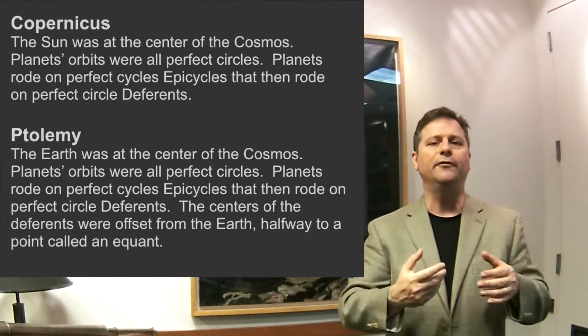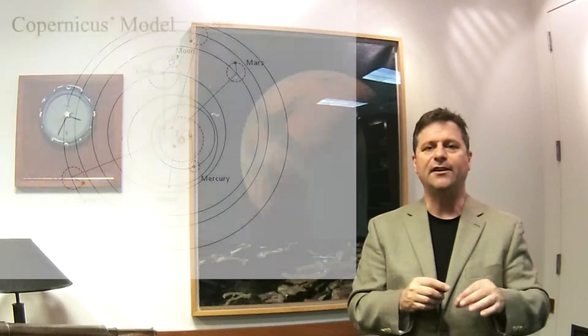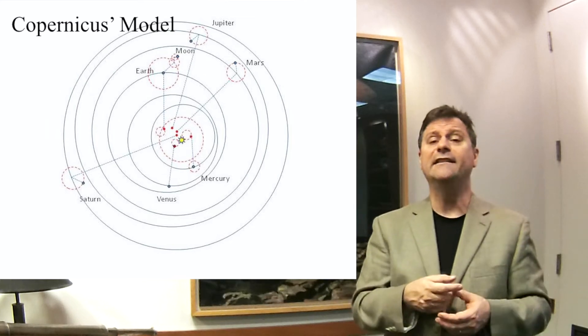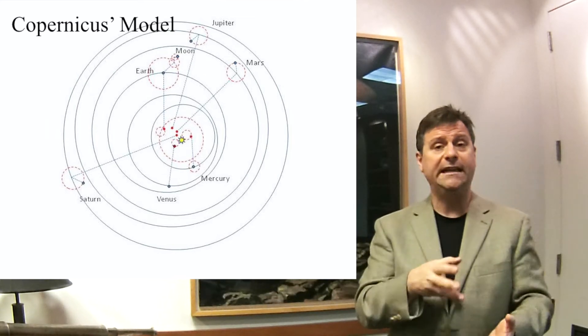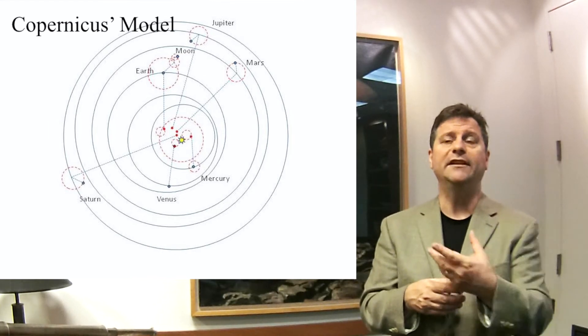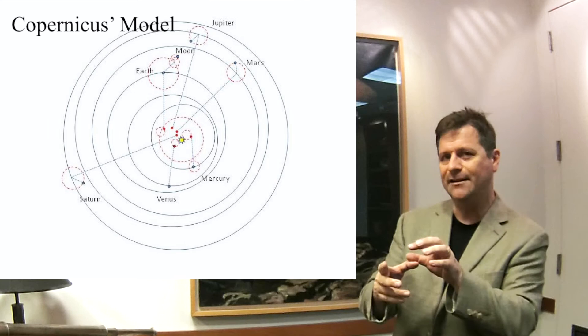So he said, I'm going to redo all the mathematics, such that the sun is at the center. I can eliminate the equants from my mathematics and see what I get. Well, what he got was the sun at the center of the entire cosmos, but kind of.